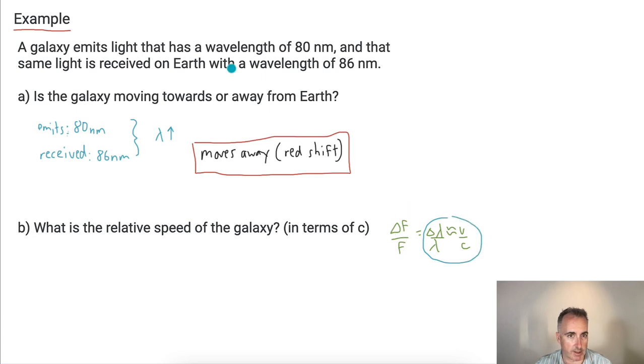So let's do this then. That means delta lambda over lambda will be equal to roughly V over C. What's delta lambda? Delta lambda is going to be the change in wavelength. So that means 86 minus 80, and we're just going to do the absolute value, whatever number is biggest, to keep this positive here. Divide that by the emitted wavelength. So what was the wavelength emitted? Emitted wavelength is 80.